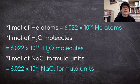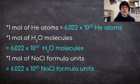So what this number means is that when you have 1 mole of helium atoms, you have 6.022 times 10 to the 23rd helium atoms. If you have 1 mole of water molecules, you have 6.022 times 10 to the 23rd water molecules. And if you have 1 mole of sodium chloride formula units, you have 6.022 times 10 to the 23rd sodium chloride formula units. So whenever you have 1 mole of a pure substance, you have the same number of particles in each one of those.